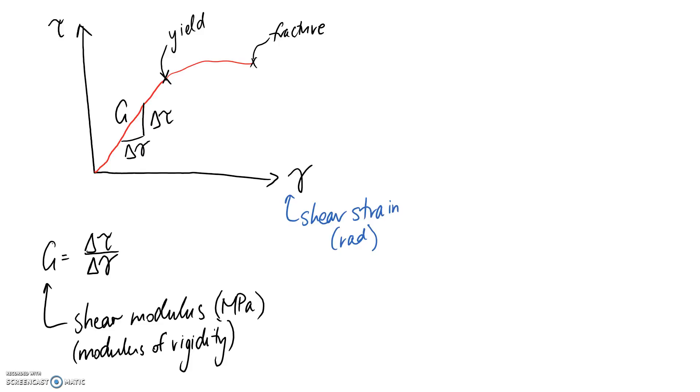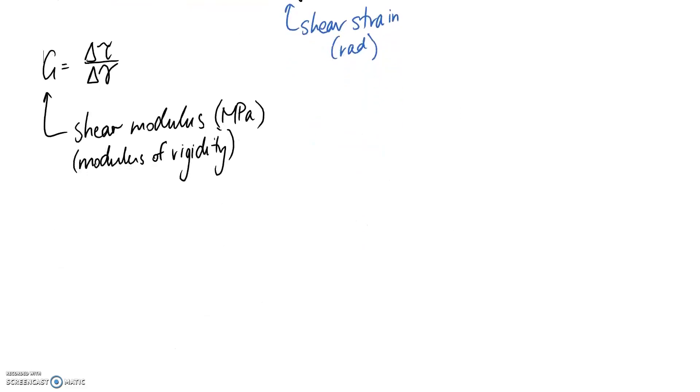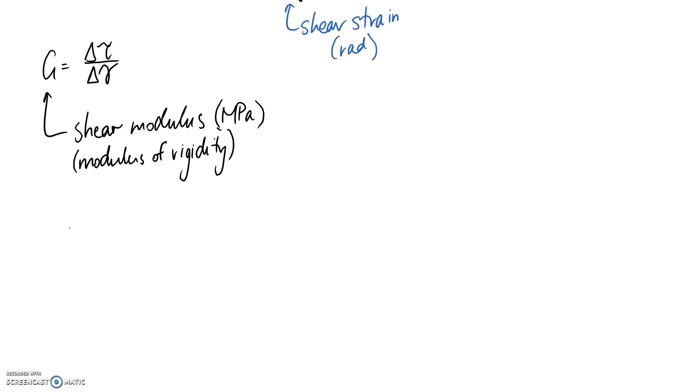The last equation that we need to cover is the one that relates together some material properties. On the left, g is your shear modulus. On the top line here, e is Young's modulus. And underneath, in the bracket, we end up with Poisson's ratio.